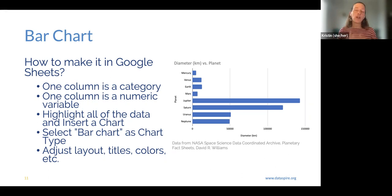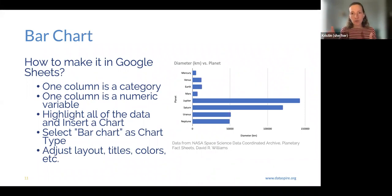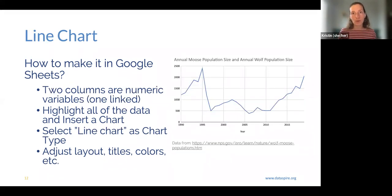Starting with bar charts — because they're first in the alphabet and because students love them. You want one column of data that is a category (here it's the planets) and at least one column that is a numeric value (here it's diameter), because in a bar chart we are comparing numeric values across different categories. Those categories can be words or numbers. Highlight all your data, insert the chart, select bar chart if Google Sheets doesn't do it automatically, then adjust the layout, titles, and colors.